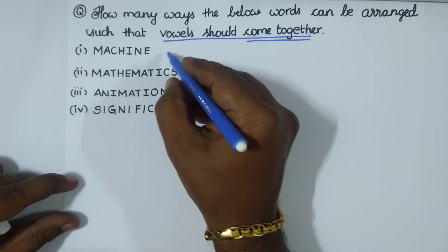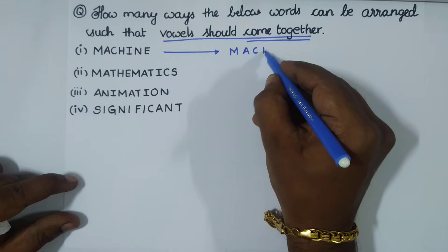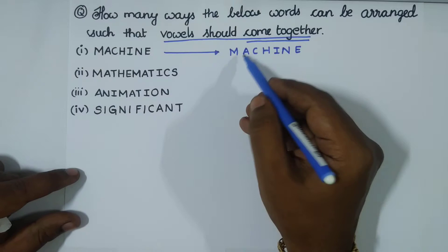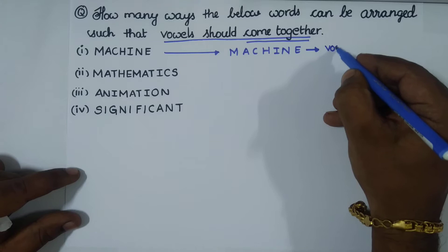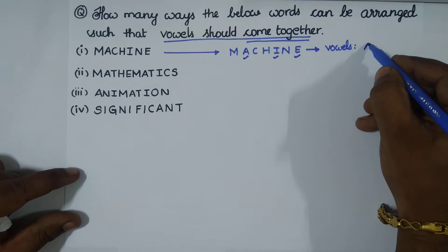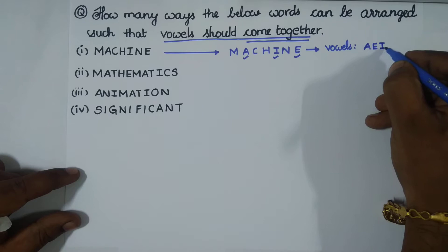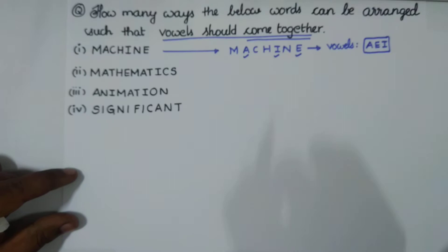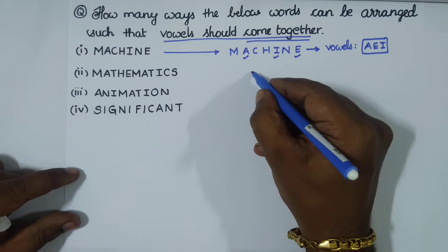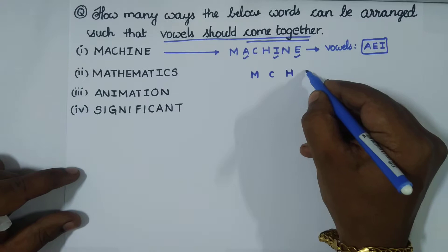We have four words. The very first word is MACHINE — M, A, C, H, I, N, E. From this word you have to separate the vowels. Vowels are A, E, I, O, U. In this word we identified three vowels: A, E, I. So we group them as A, E, I. The remaining letters are M, C, H, and N — four letters.